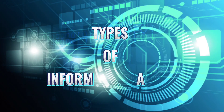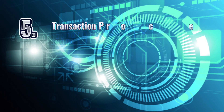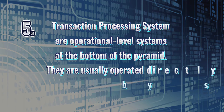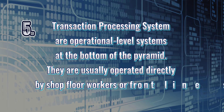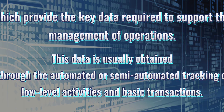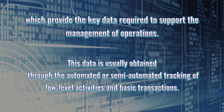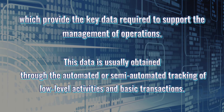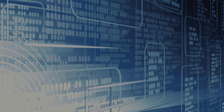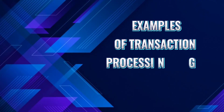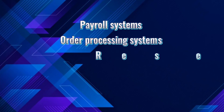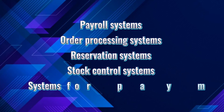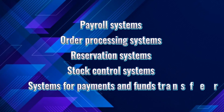Transaction processing systems are operational-level systems at the bottom of the pyramid, usually operated directly by shop floor workers or frontline staff, which provide the key data required to support the management of operations. This data is obtained through automated or semi-automated tracking of low-level activities. Examples include payroll systems, order processing systems, reservation systems, stock control systems, and systems for payments and funds transfers.